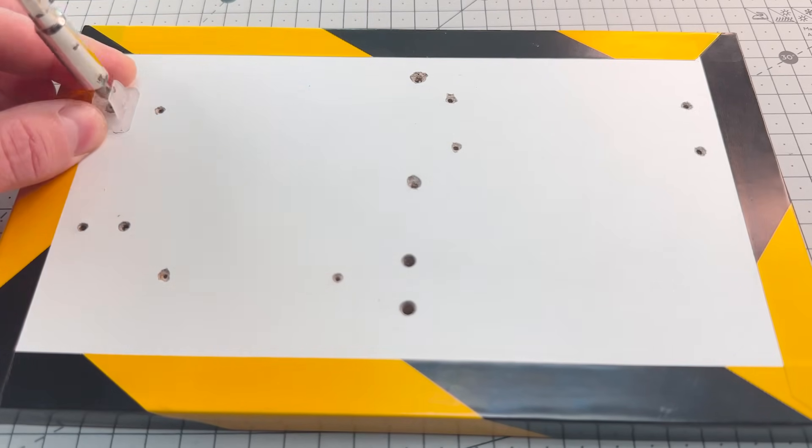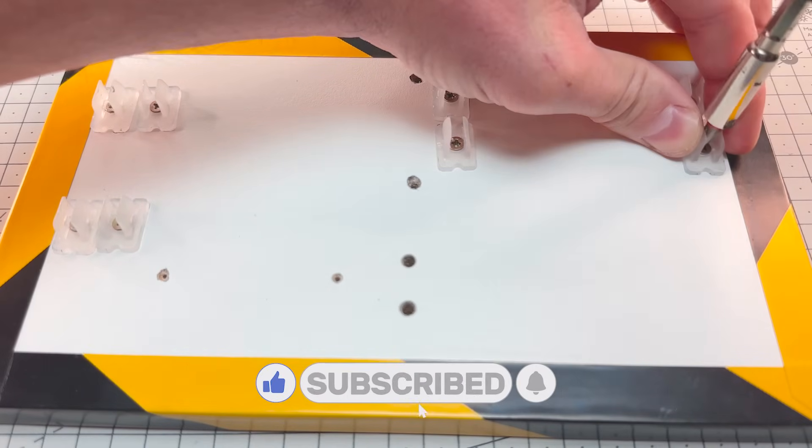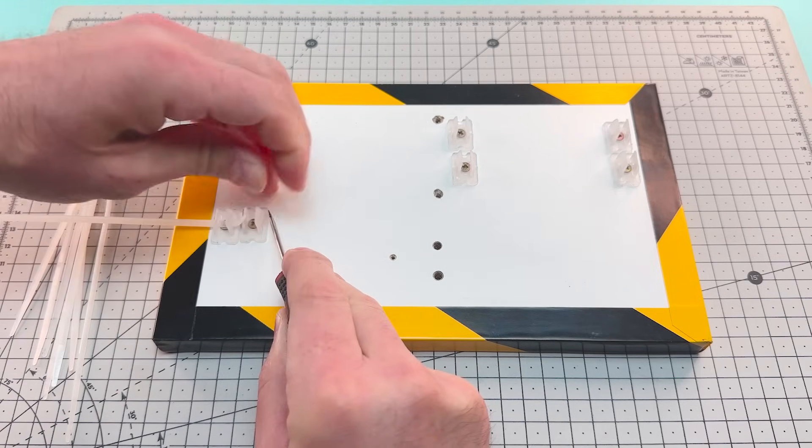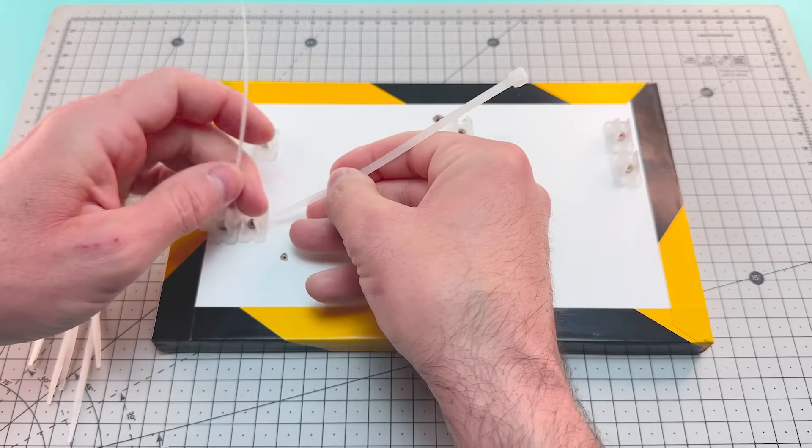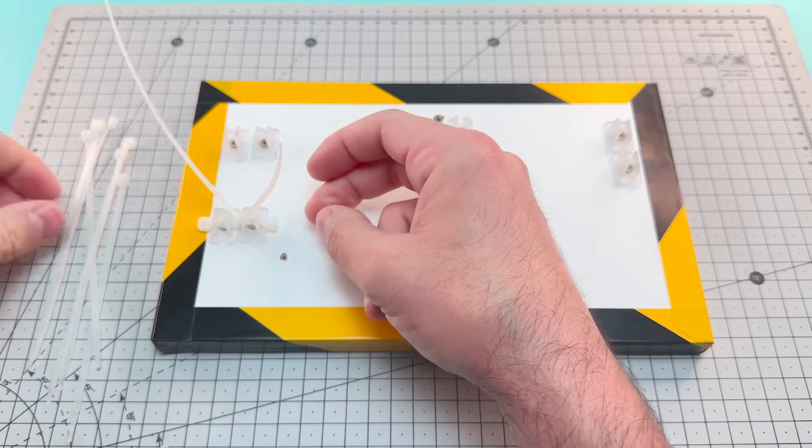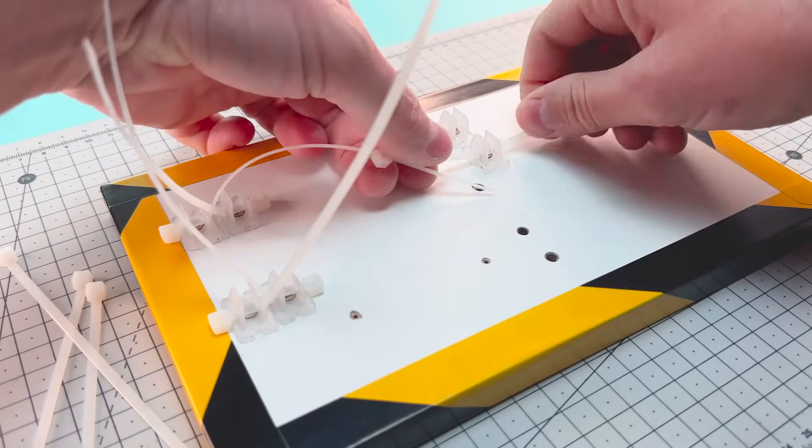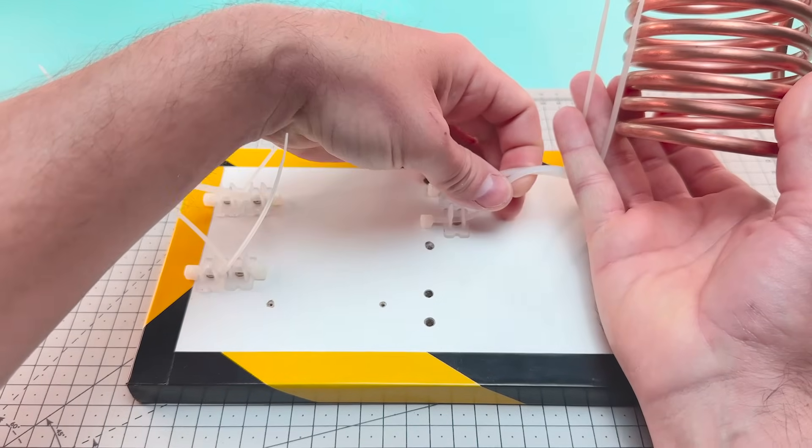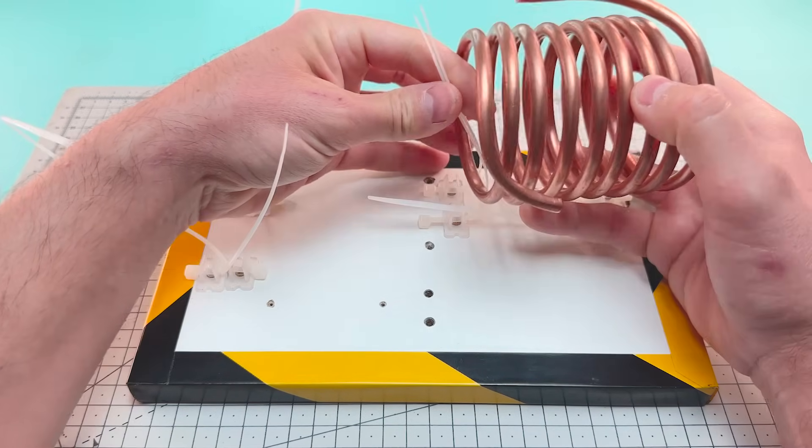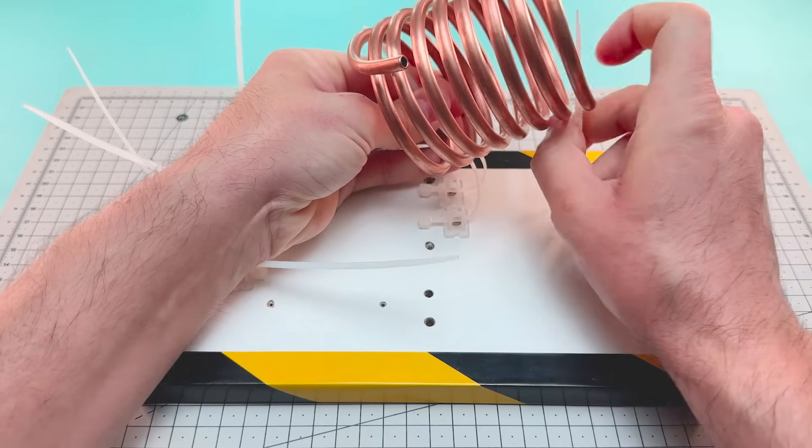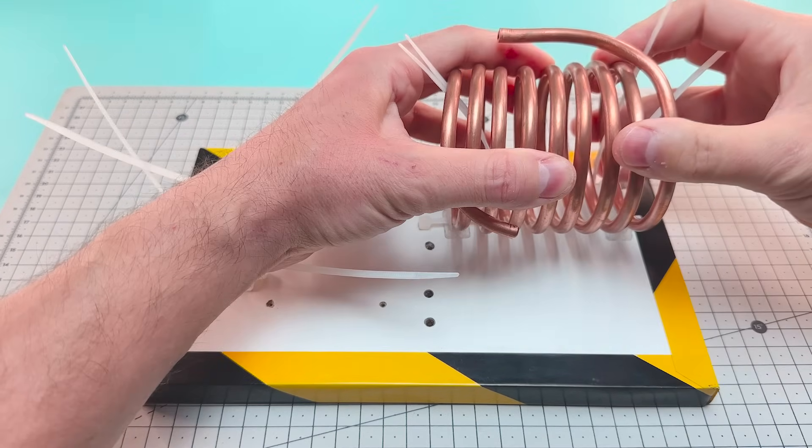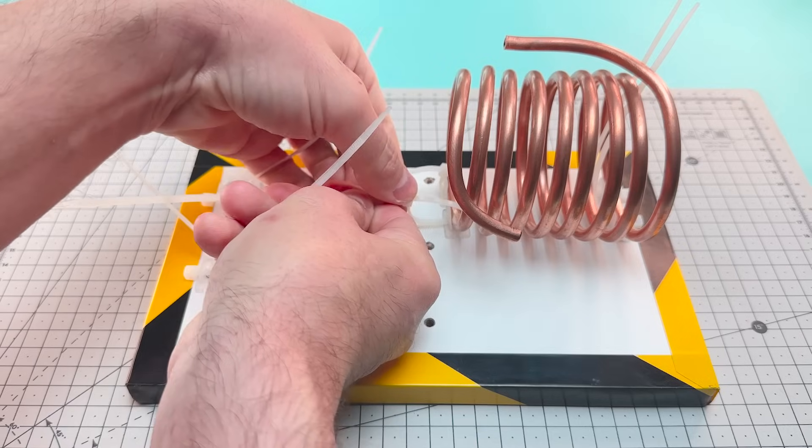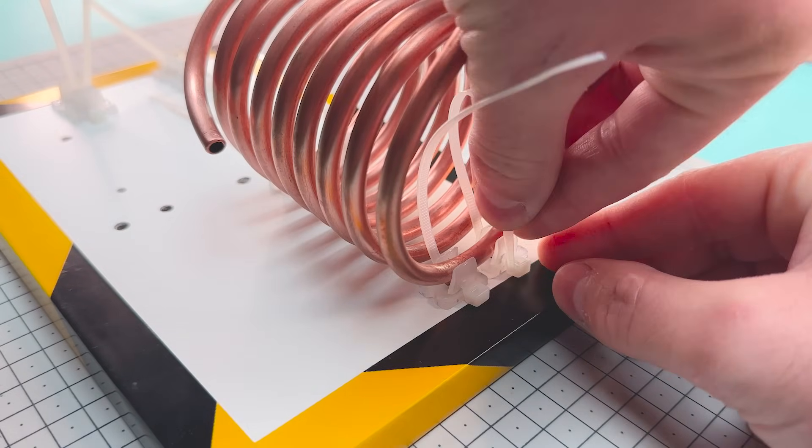We're going to attach some plastic supports to hold the tubes in place. First we'll secure the evaporator tube. A few zip ties will be enough to fasten our conduit. We insert the zip ties through the supports to hold the tubes and then secure the evaporator.